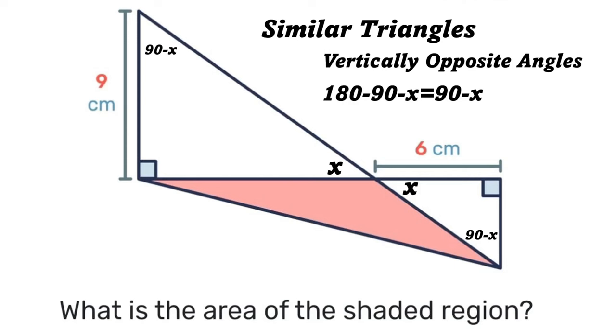But why is that 90 minus x? Well, as we know, the three angles in a triangle add up to 180 degrees. So if we subtract the 90 and the x from 180, we're left with 90 minus x.